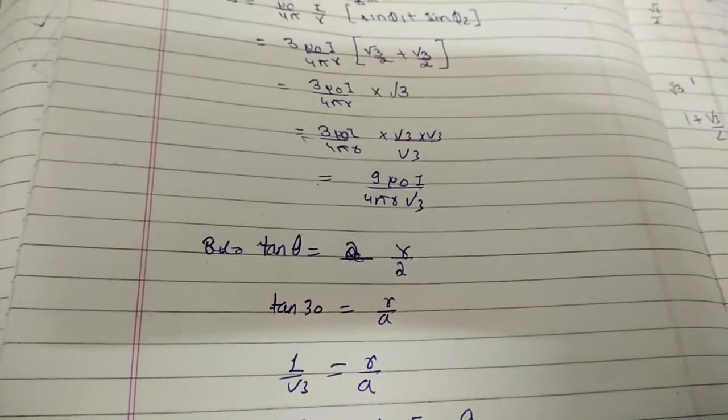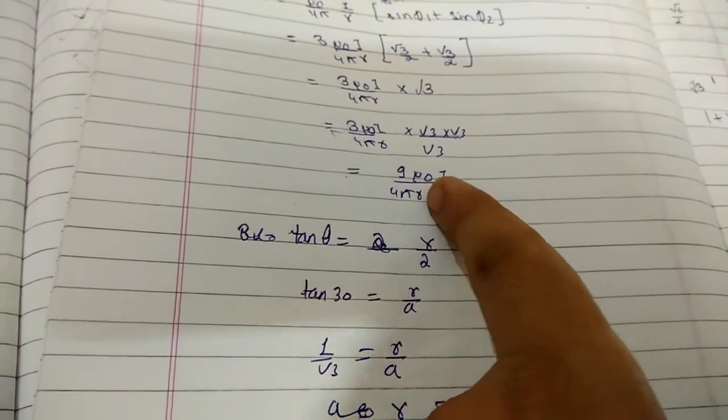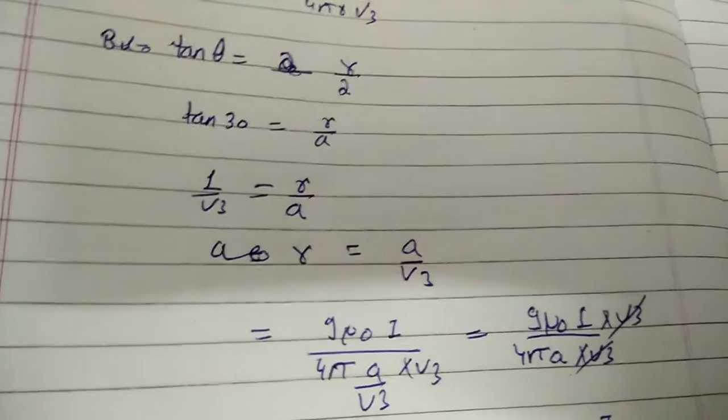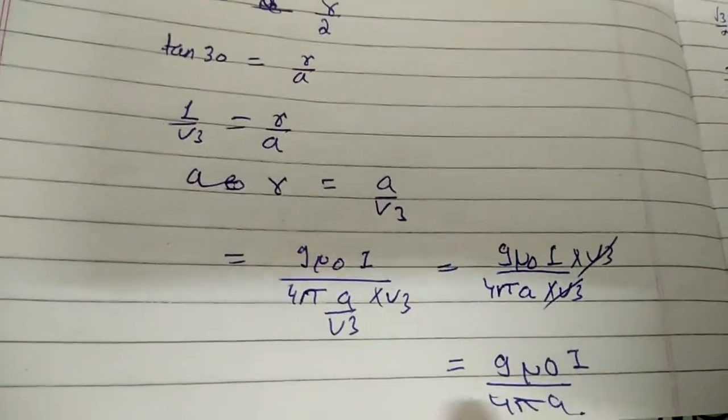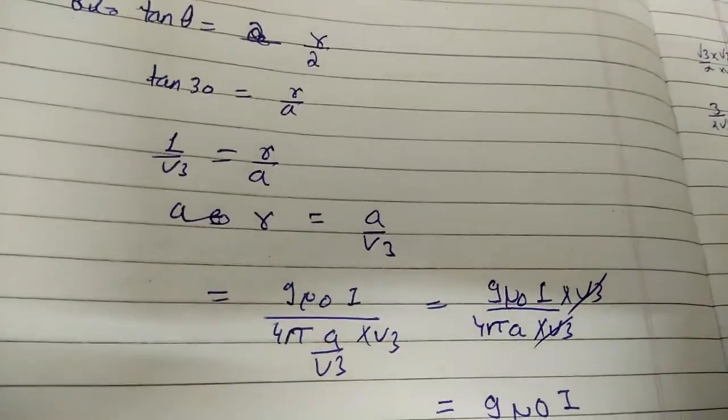Therefore r equals a/√3. By putting this r value in this equation, we get 9μ₀i/4πa, as you can see I have done the solution here.